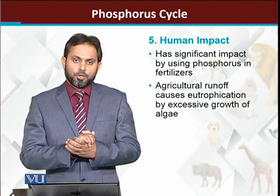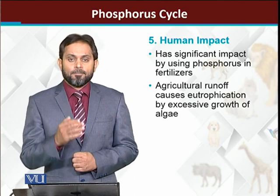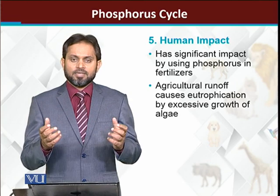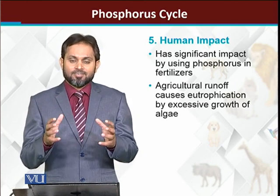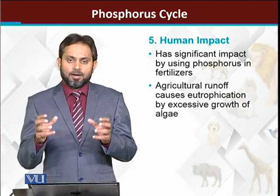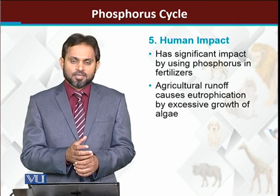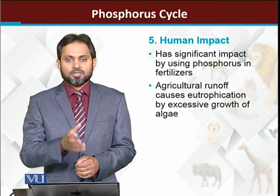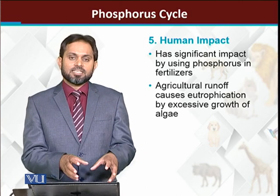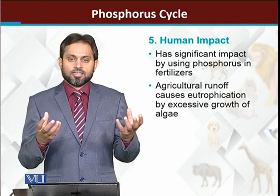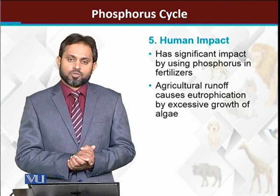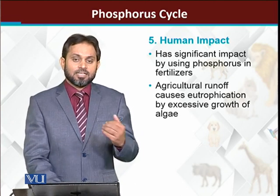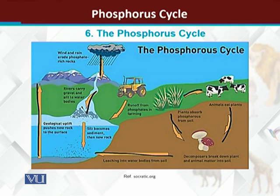What is the human impact on the phosphorus cycle? Humans have explored the phosphorus reservoirs. The DAP they use in their fertilizers — what we call chemical fertilizer — is basically phosphorus-containing fertilizer. Humans use phosphorus-containing fertilizers in agriculture, which accelerates the phosphorus cycle. However, a negative impact is that when this phosphorus runs off with water into water bodies, algae grow excessively, causing algal bloom, which is a negative thing for the natural environment.